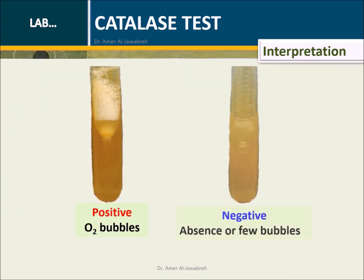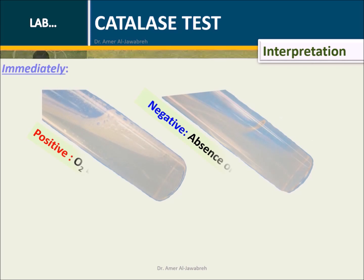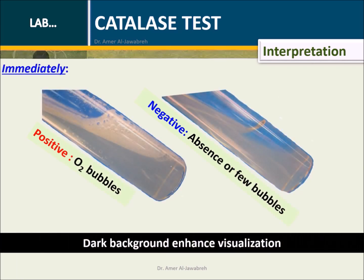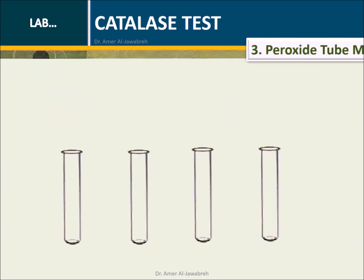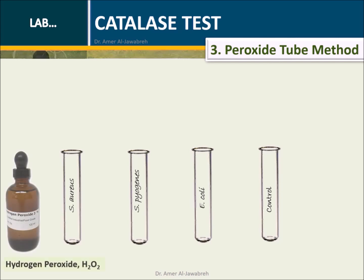Interpretation: Oxygen bubbles indicate positive results; absence or few bubbles indicates negative results. Dark background enhances visualization. Next: the peroxide tube method.